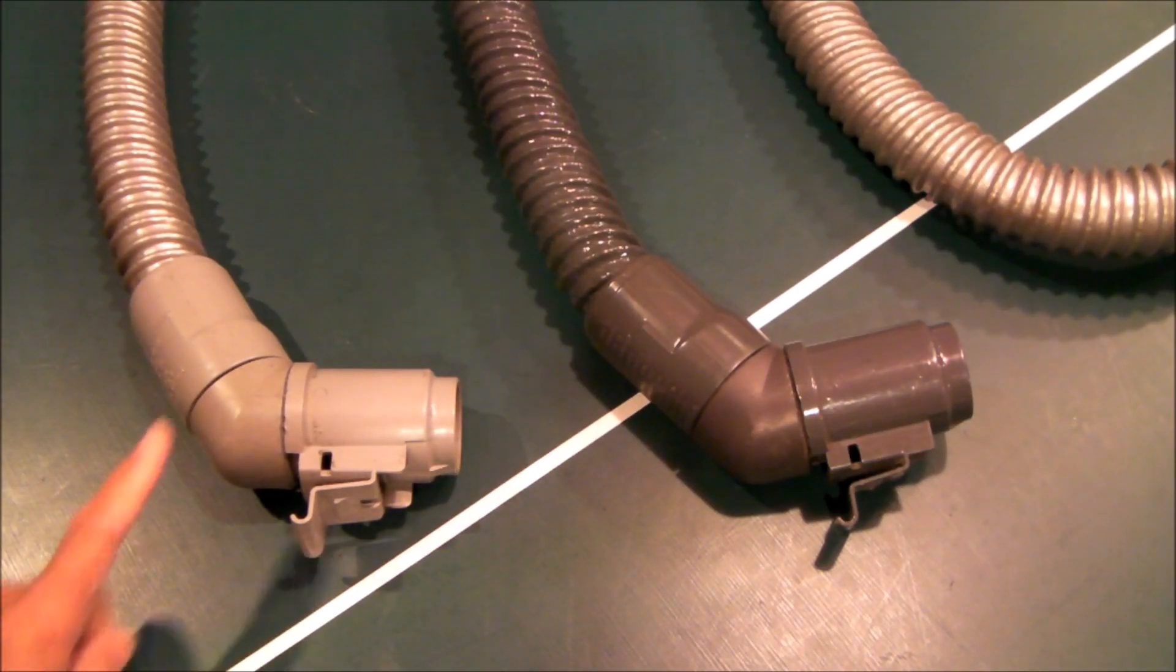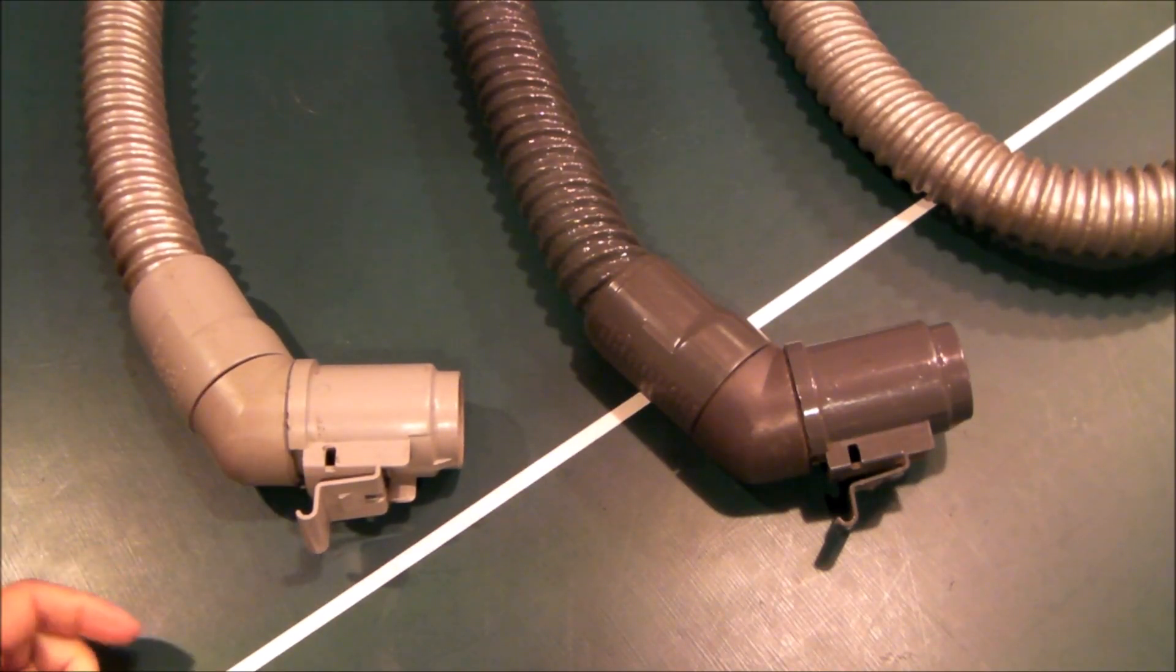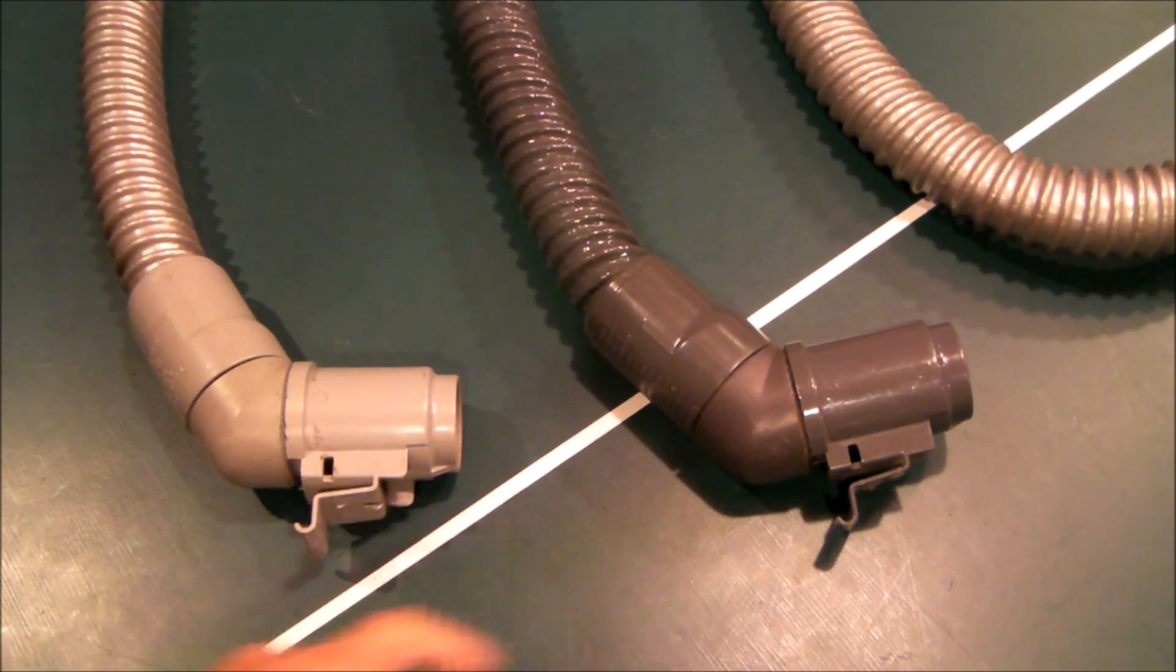Hello, everybody. If you have a Kenmore or Panasonic canister vacuum that has a hose on it like this, this is the machine end of the hose.